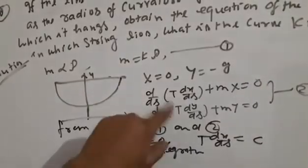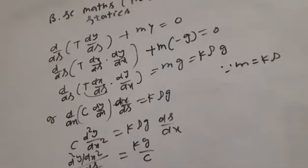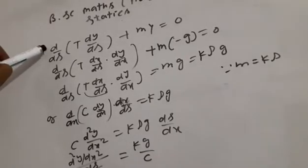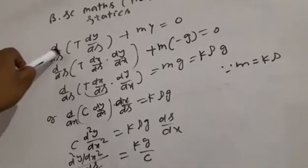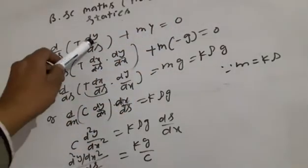Under gravity, we get T dy/dx equal to c, where c is a constant. This equation becomes d/dx times dy/dx.